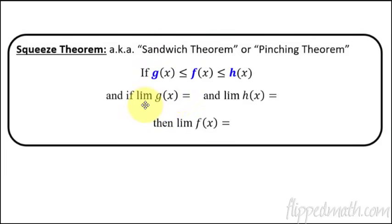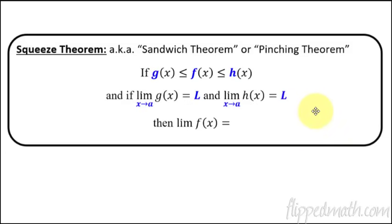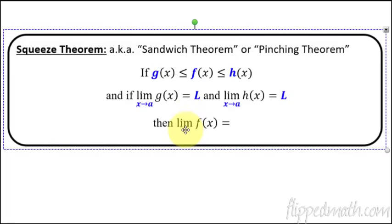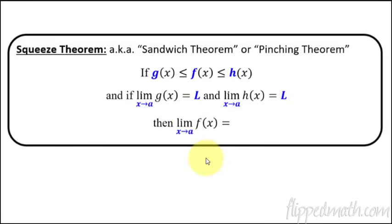We're taking the limit of g as x approaches some value a — what is the limit going to be? Let's call it L for limit. So that's the lower graph on the bottom. Now, if we take the graph on top and we approach the same value a, and its limit is also the same as the limit of g, what that means is we can determine that the limit of f as x approaches a is also going to equal L. So f is in between g and h, and if the limit of g and the limit of h both equal the same limit, then the limit that's in between has to be the same thing.